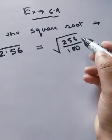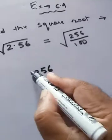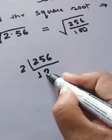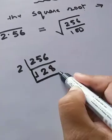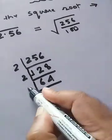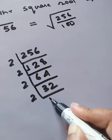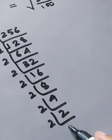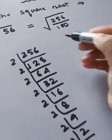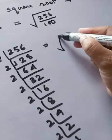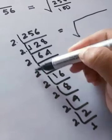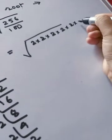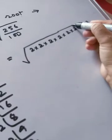Now we have to do the prime factorization of the numbers. We'll start with 256. The last digit is even so it is divisible by 2. Dividing repeatedly by 2: 256 → 128 → 64 → 32 → 16 → 8 → 4 → 2 → 1. So there are eight 2s in the factorization of 256.